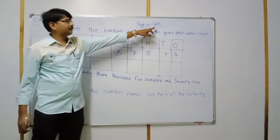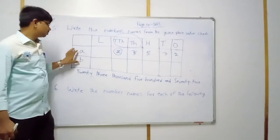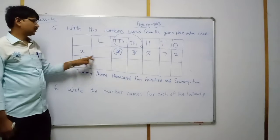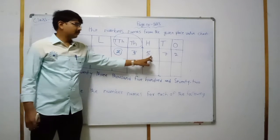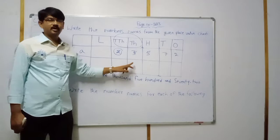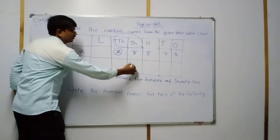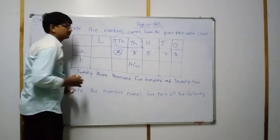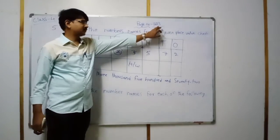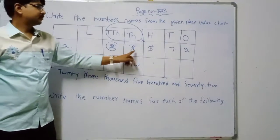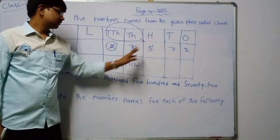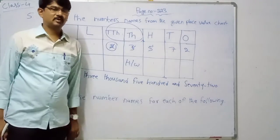Page number 223 has two problems — A and B. Here I solved problem A in front of you. Problem B is your homework, children. Observe the number based on the places and write the number name.